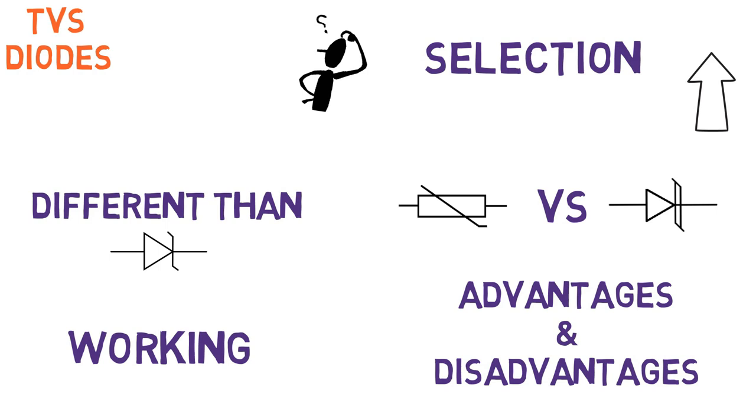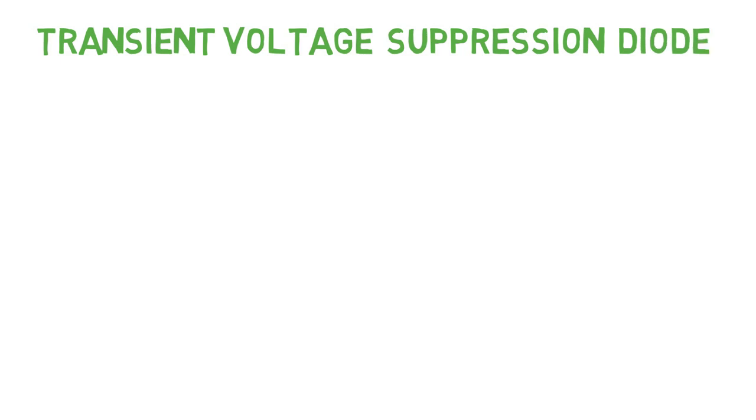So let's get started. Let's start with the question, what is a TVS diode? Its full form is transient voltage suppression diode, which protects the sensitive semiconductor devices from damaging due to transient voltage.